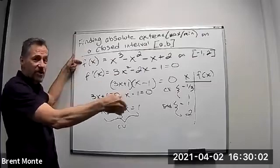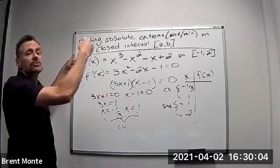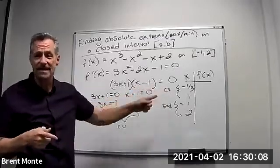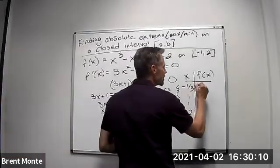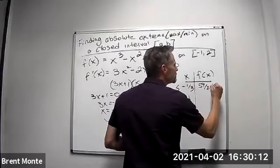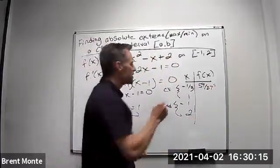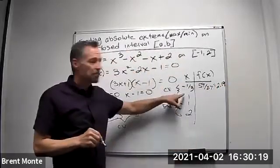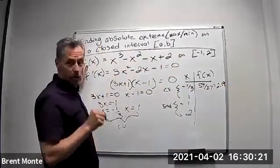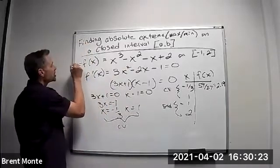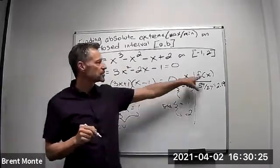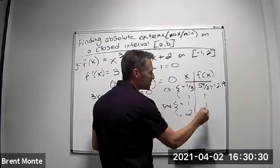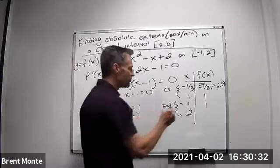Whichever gives me the largest value, that's my absolute max. Whatever the smallest value is, that's my absolute min. So I plug these in and I've already done this. This comes to 59 over 27, so it's about 2.19. I plug in the one again into my original function. The original function is the y value. So that's what I'm getting here. So when I plug in one, I get one. When I plug in negative one, I also got one. And when I plug in two, I get four.